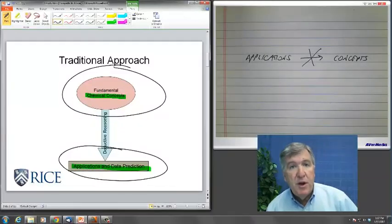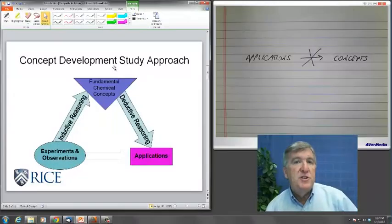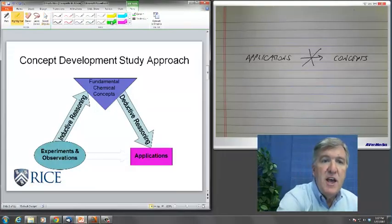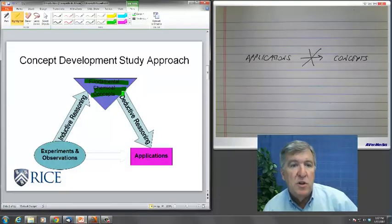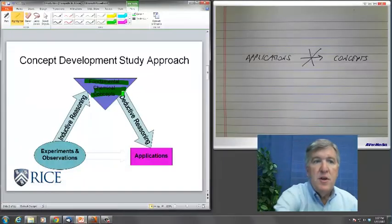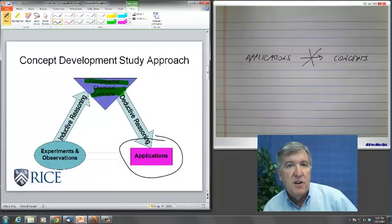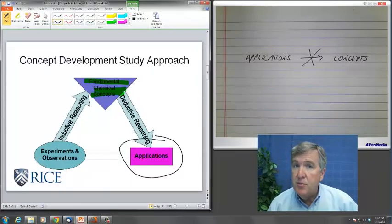So, what would be a better approach? A better approach is based upon this diagram here. This is the essence of the concept development approach. Notice here that we still have the fundamental chemical concepts as being sort of our highest goal. That's what we're really trying to get students to get to. And notice on the right side of the diagram back over here that, in fact, we still have these applications and we still have the deductive reasoning. But we've added a key additional part here,